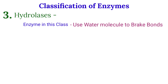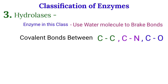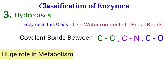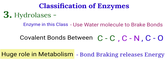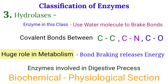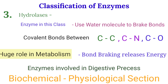The third class is hydrolases. Enzymes in this class use water molecules for bond-breaking purposes, mainly breaking bonds between carbon-carbon, carbon-nitrogen, and carbon-oxygen. These enzymes have huge significance in metabolism since bond breaking releases energy. They are generally involved in digestive processes and many other biochemical processes, and will be covered in upcoming lectures.